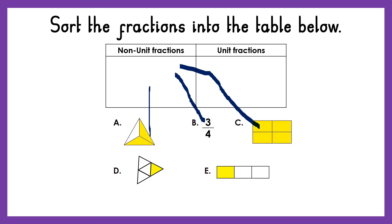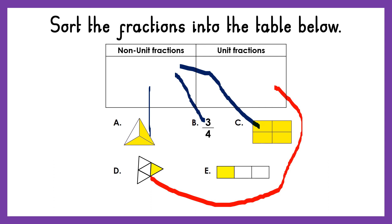D is showing us that one part is shaded out of four parts altogether. This fraction is one out of four, or a quarter — so this fraction is a unit fraction and goes in the second box. At E, we've got a shape which has three parts altogether and one of them is shaded — one out of three altogether, or a third. This is a unit fraction, so this also goes in the second box.